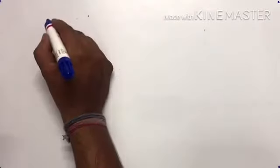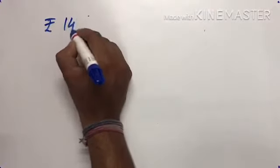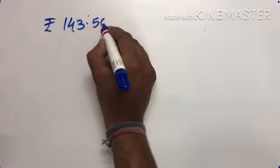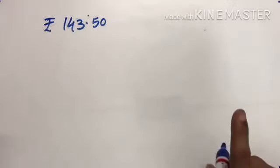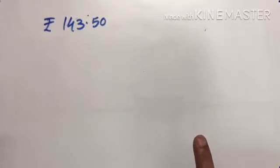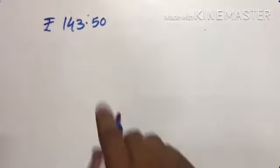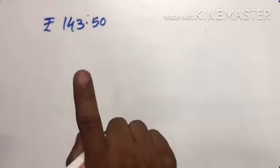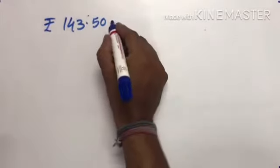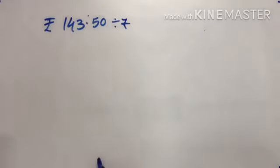Now the question is: Pamela gets rupees 143.50 per week for her pocket money. She spent equal amount daily. How much money did she spend on Monday? One week has 7 days, so we just need to divide it by 7.